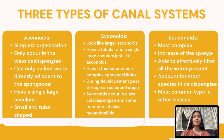Three types of canal systems: asconoids, syconoids, and leuconoids. These are the three types of canal systems, and they depend on the placement of choanocytes, thus affecting the capture of food. Asconoids have the simplest organization and only occur in the class Calcispongiae. They can only collect water directly adjacent to the sponge's cell. Asconoids have a single large osculum and are small and tube-shaped, so that food and water in their central cavity is accessible to choanocytes.